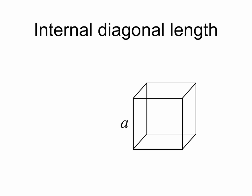So if we have a cube here of side length a, we've shown the internal diagonal in blue, connecting opposing vertices.